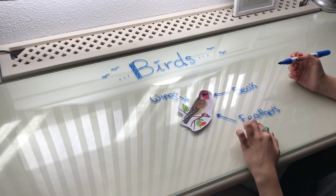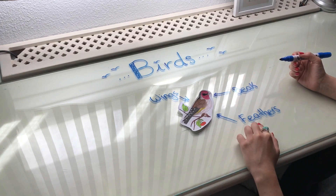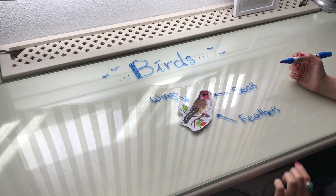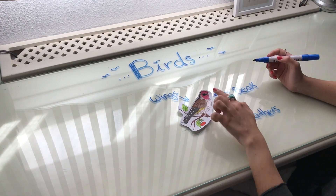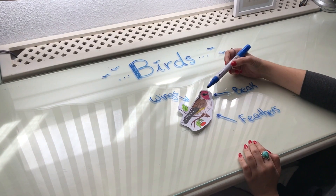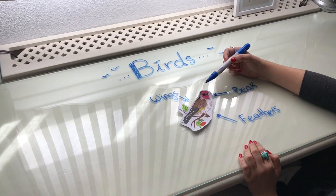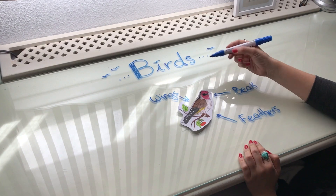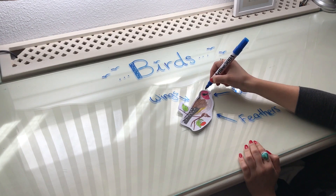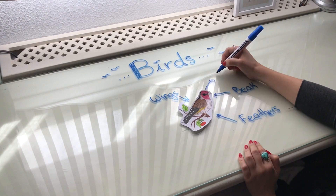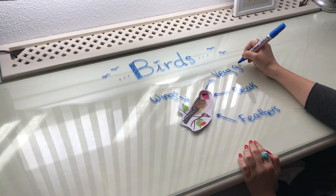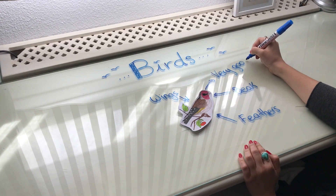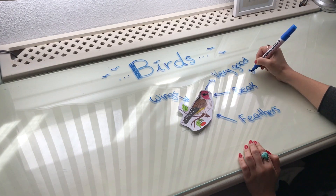Feathers help them to keep the temperature of their body and also help them to fly. They have a very small head with very small eyes, but they have very good sight. Do you remember what sight means?